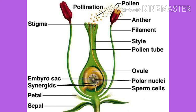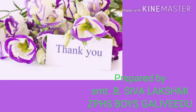Coming to the style — it is a stalk-like structure connecting the stigma to the ovary. It transports the pollen to the egg cell to deliver the male gametes. Coming to the stigma — it is the portion of the pistil that receives the pollen. It is commonly sticky or feathery to capture the pollen.